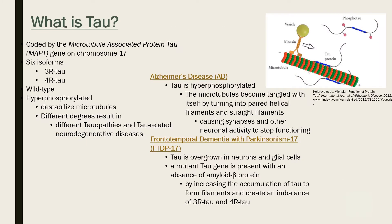Six tau isoforms exist — three each of three-repeat and four-repeat — whose numbers correlate with the number of binding sites. In a healthy brain, these isoforms are proportional to each other. The wild-type tau's main function is to stabilize, maintain, and create microtubules, which assist in creating the cytoskeleton of neurons.